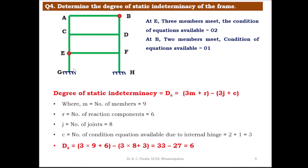The number of members m = 9, the number of joints j = 8, and the reaction components at G and H are 3 each, so r = 6. Therefore, ds = 3(9) + 6 − 3(8) + 3 = 27 + 6 − 24 + 3 = 33 − 27 = 6. The degree of static indeterminacy of this frame is 6.